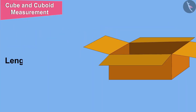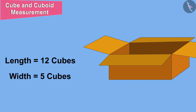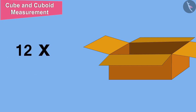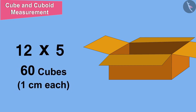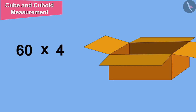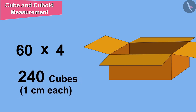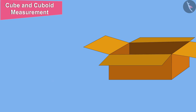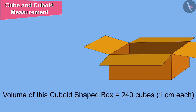This means that this box will have 4 layers made up of cubes of dimension 1 cm each. There will be 12 cubes in the length of the box and 5 cubes in the width. Therefore, one layer of the cuboid-shaped box will have 12 times 5, which is 60 cubes of dimension 1 cm each. And because the box will have 4 such layers, the box will have a total of 60 times 4, which is 240 cubes of dimension 1 cm each. In other words, the volume of this cuboid-shaped box will be equal to 240 cubes of dimension 1 cm each.